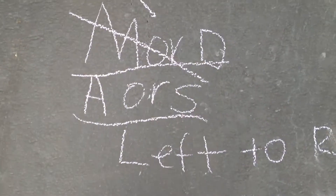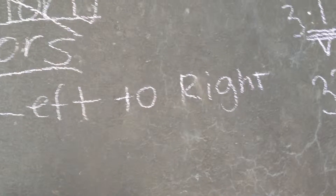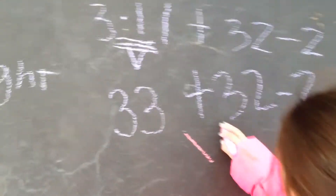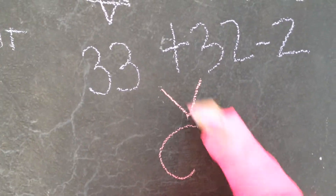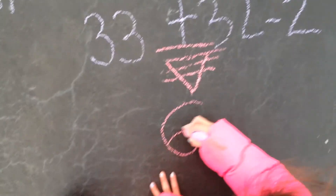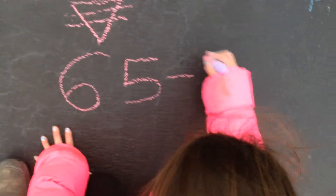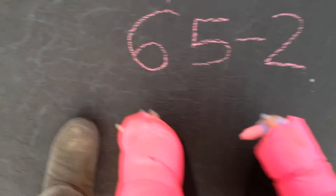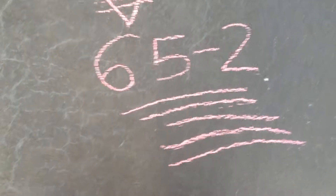The next thing on our list is addition or subtraction. Again, since there are two, we go from left to right. We have 33 plus 32 — we're going to underscore it 4 times. The answer is 65. We rewrite the rest of the problem and underscore it 5 times, and the answer is 63.